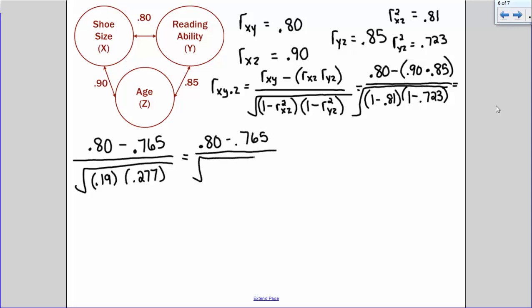So now we're left with 0.19 times 0.277 gives me 0.053. Let's go ahead and solve for the numerator and for the square root there. So 0.80 minus 0.765 is 0.035, and then 0.053, the square root of that is 0.230. And we're left with the partial correlation coefficient of 0.152.